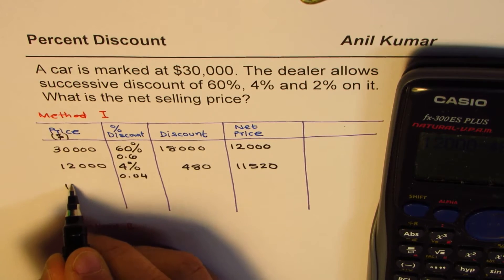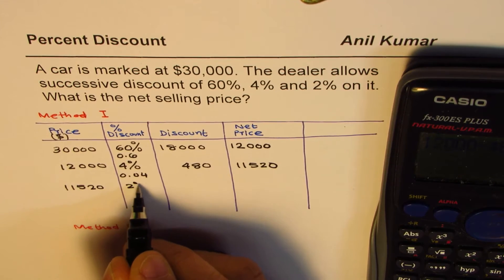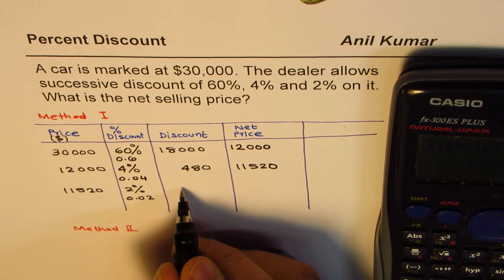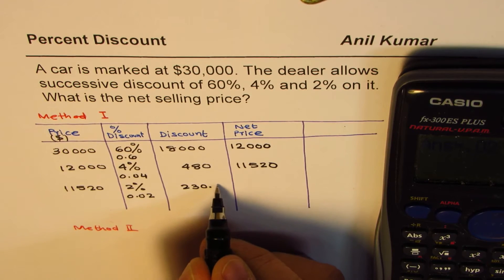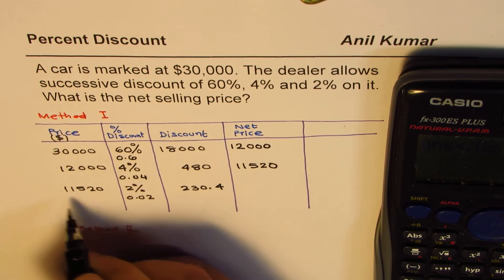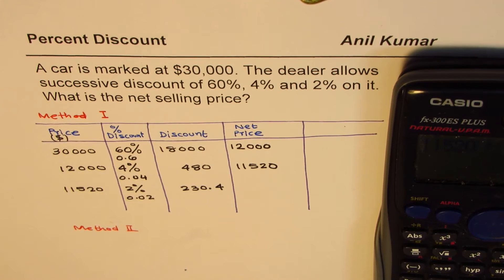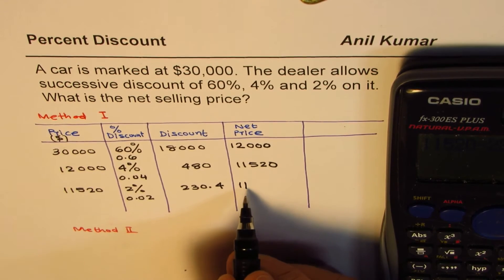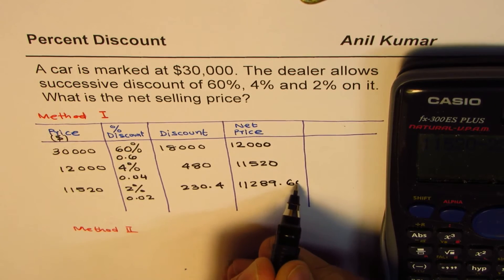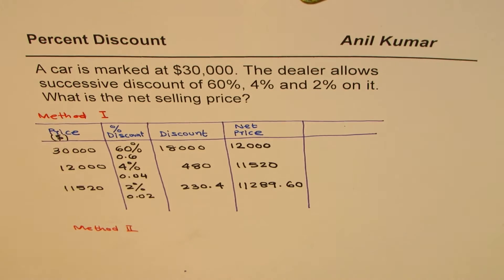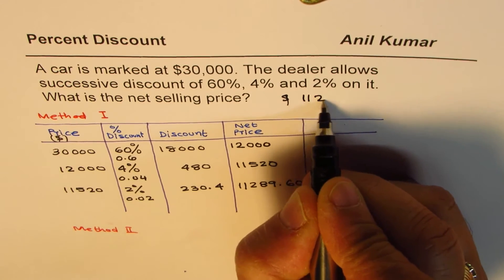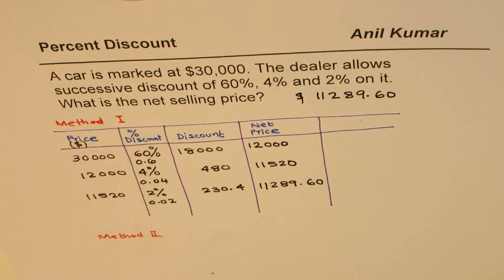That gives us 11,520. That becomes the net price after 60% successive 4%. Now we also have 2% on it, so let's add 2% discount. 11,520 times 2%, which basically means 0.02, so we'll multiply this by 0.02 and that gives us in decimals 230.4. We'll take away this from 11,520. 11,520 take away 230.4, so the net amount in decimals will be 11,289.60. That is your answer.